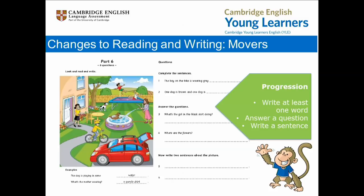Here is the new task for movers reading and writing Part 6. The writing task is structured through a three-step progression. The challenge increases with each step as the amount of scaffolding or support decreases. Using a picture prompt, candidates first complete two sentences using one or more words — questions one and two. Next, for questions three and four, candidates answer two questions about the picture; they could do this by writing a phrase or sentence. Lastly, for questions five and six, candidates write two sentences about the picture. No word prompts are provided for this task, as candidates are expected to draw on their own vocabulary and their ability to write simple, short messages in basic sentence form, starting with a capital letter and ending with a full stop.